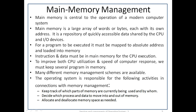For the CPU to process data, it must be in memory. For a program to be executed, it must be mapped to absolute addresses and loaded into memory. As the program executes, it accesses program instructions and data from memory. To improve CPU utilization and response speed, we must keep several programs in main memory. Many different memory management schemes are available and their effectiveness depends on the particular situation.